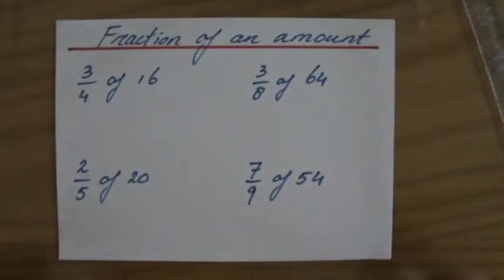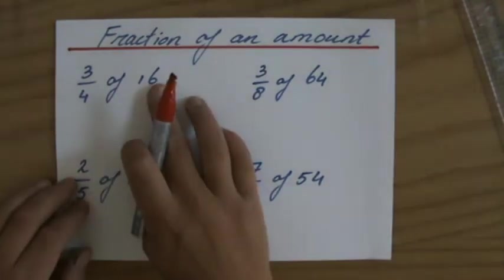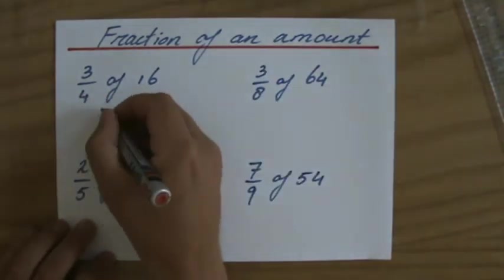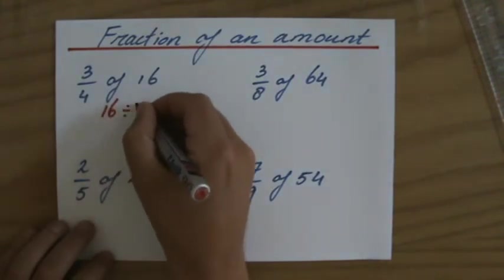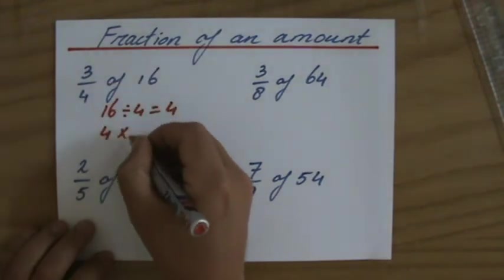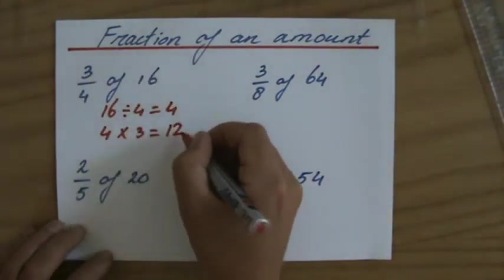So the first question I've done. It's 16 divided by 4 is 4. Let me write that down here. 16 divided by 4. That is 4. But I have 3 of those parts. So the answer is 12.